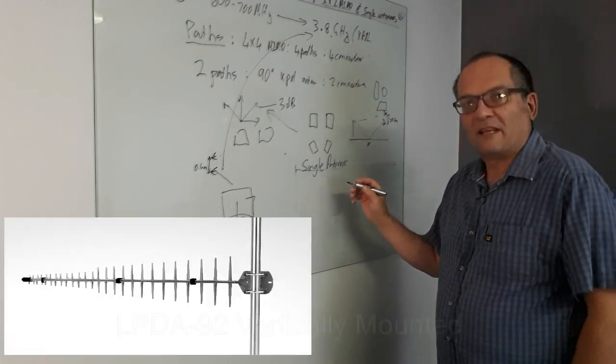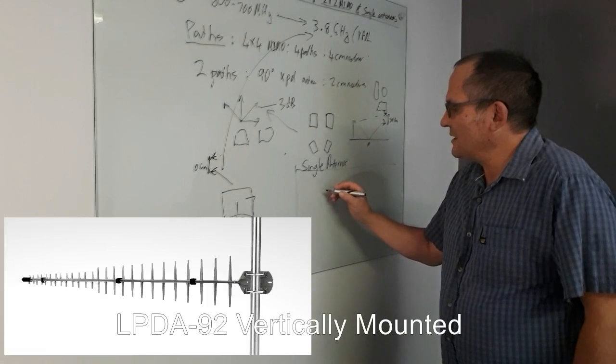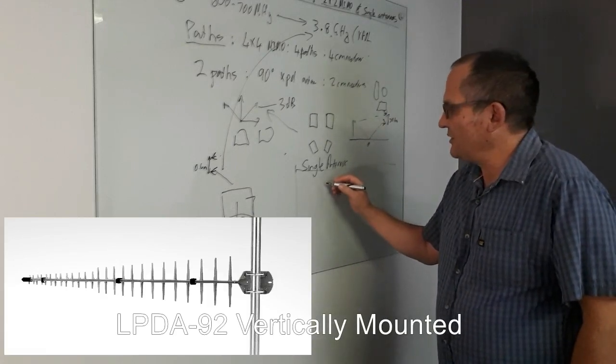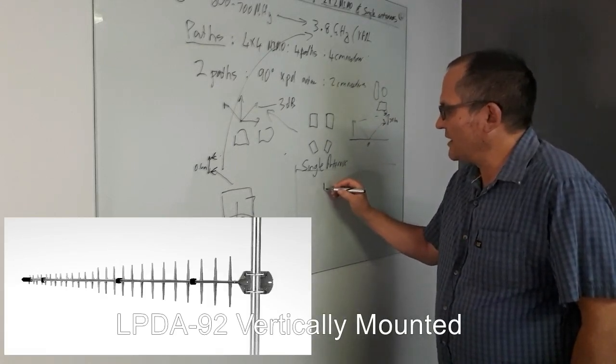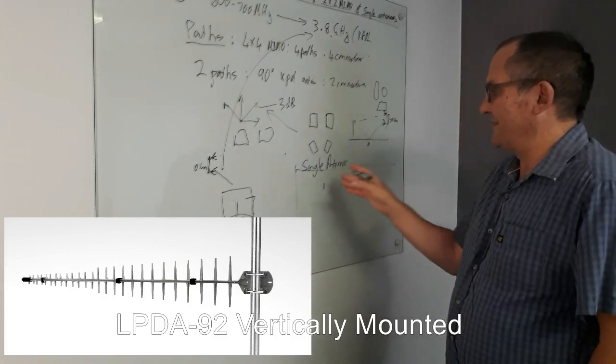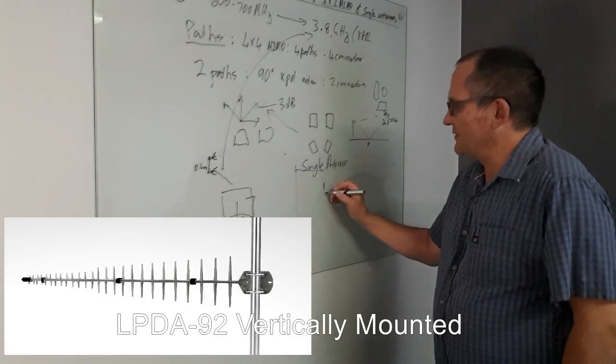Best example in my case is perhaps LPDA92. LPDA92, we already provide you with a mount that allows you to, normal mount is vertical. So now we're looking from the front. So the antenna is vertically on it.